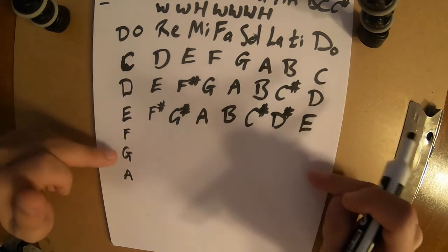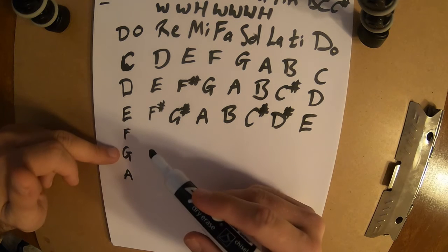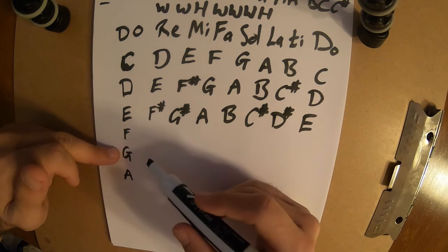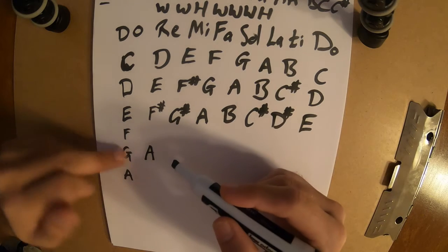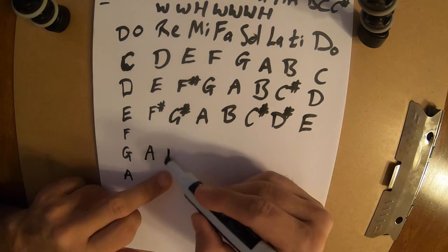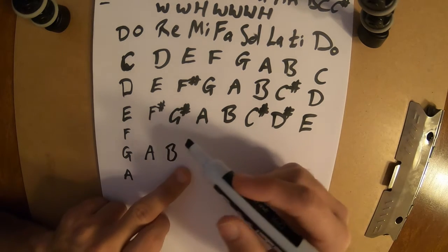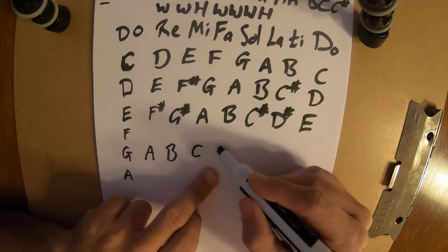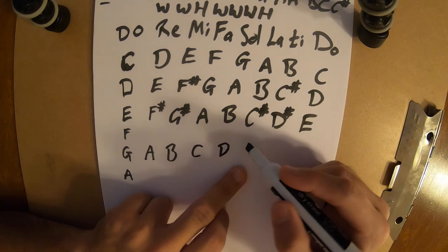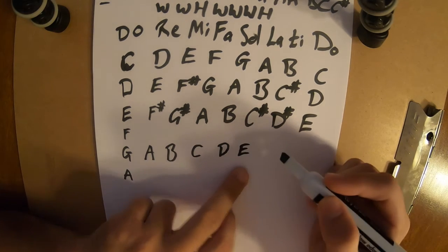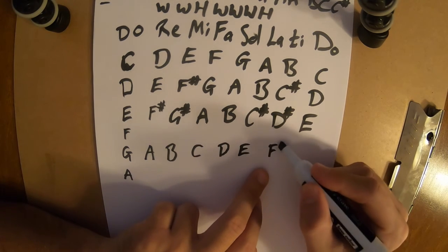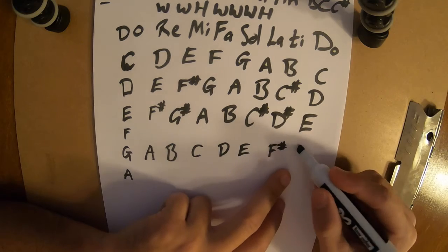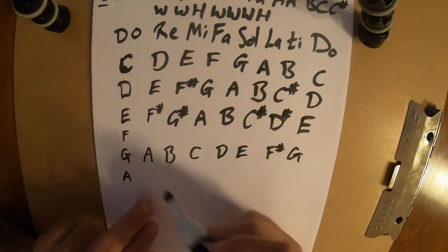All right, so we're going to do F, but we're going to come back to it. We're going to do G next. So G, whole step, first whole step. Second whole step. Half step. Whole step. Whole step. Whole step. Half step. First and last match. Cool.